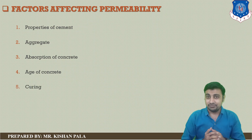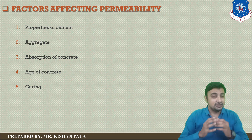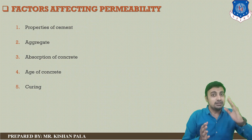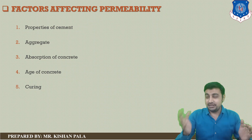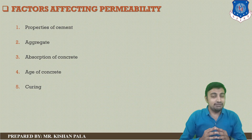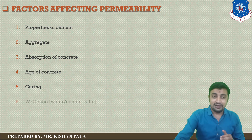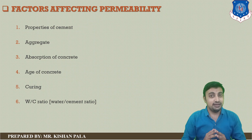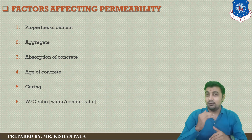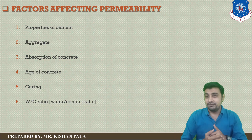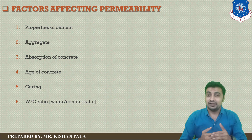The next factor is curing. With increasing the curing process, permeability decreases. Comparing wet curing and steam curing, steam curing results in higher permeability compared to wet curing. The next factor is water-cement ratio. With increasing the water-cement ratio, permeability increases, and with a low water-cement ratio, permeability will be low.